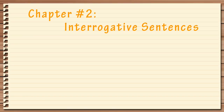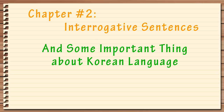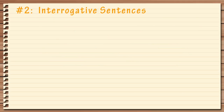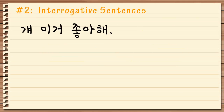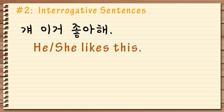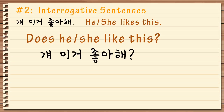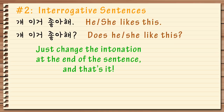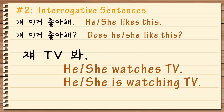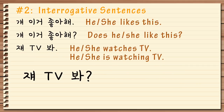Hi everyone! Chapter number 2 is about making interrogative sentences. 걔 이거 좋아해 means 'he likes this' or 'she likes this.' Then how do you say 'does he like this' or 'does she like this?' 걔 이거 좋아해? 제 TV 봐, 제 TV 봐?